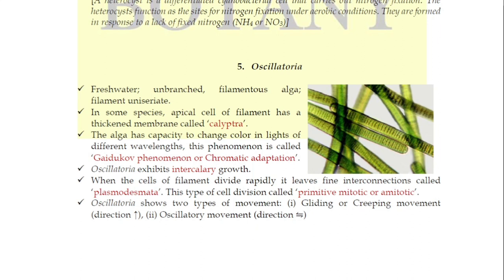First, we look at Oscillatoria, which is the fifth member of Cyanophyta. Oscillatoria is a freshwater alga and its filament is unbranched — so it is a filamentous alga. Notably, there is no branching, meaning the filaments are uniseriate, as you can see in the picture — a single cell undergoes transverse division and cells grow longitudinally, with no lateral cell division.